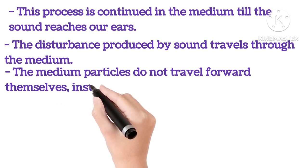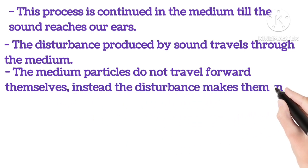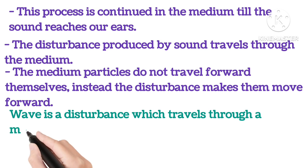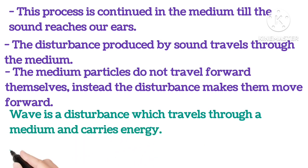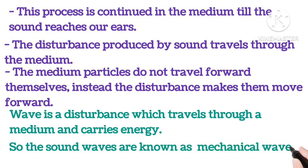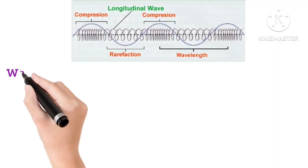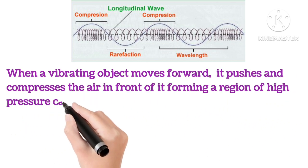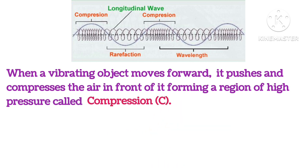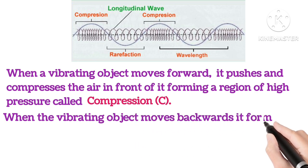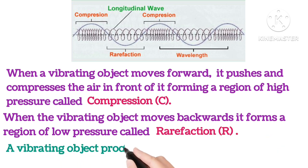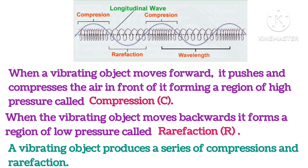The medium particles do not travel forward themselves; instead, the disturbance makes them move forward. A wave is a disturbance which travels through a medium and carries energy, so sound waves are known as mechanical waves. As you can see in the picture, when the vibrating object moves forward it pushes and compresses the air in front of it, forming a region of high pressure called compression. When the vibrating object moves backward, it forms a region of low pressure called rarefaction. A vibrating object produces a series of compressions and rarefactions.